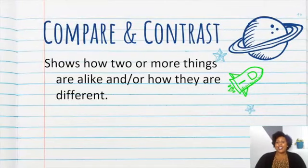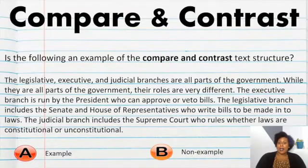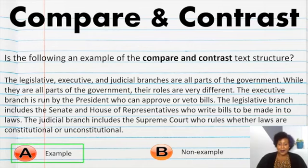All right, now we're at compare and contrast. The text that we read before, the example, that was more of a compare and contrast text because it showed the differences between the two groups of people. So, we know that it shows how things are alike and how things are different. Some of the keywords for compare and contrast are as follows. Let's read the following to see if this is a compare and contrast text structure. The legislative, executive, and judicial branches are all parts of the government. While they are all parts of the government, their roles are very different. The executive branch is run by the president who can approve or veto bills. The legislative branch includes the Senate and House of Representatives who writes the bills to be made into laws. The judicial branch includes the Supreme Court who rules whether laws are constitutional or unconstitutional. Is that an example of compare and contrast? If you said yes, then you are correct. Good job.